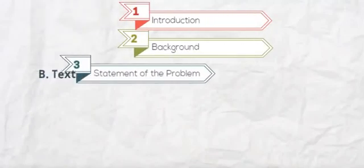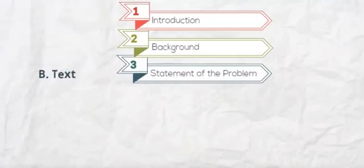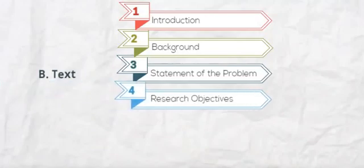Second, background: the background information provides a prelude to the reader of the research report. Third, statement of the problem includes basic facts about the problem, causes or origin of the problem, and also explains the significance of the problem. Fourth, research objectives: the objectives may be research questions and associated investigative questions.